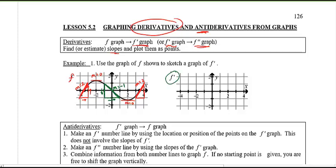Now at those same x-values in the graph to the right, I want to plot the slopes. Going left to right: at x = -3.5 the slope is 2; at x = -2 the slope is 0, so I plot 0; at x = 0 the slope is -1; at x = 2 the slope is 0; and at x ≈ 3.5 the slope is 2. Connecting them all together with a curve, with solid dots at the endpoints — there you have it!